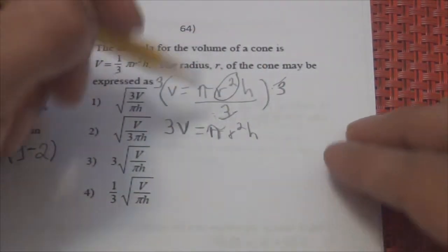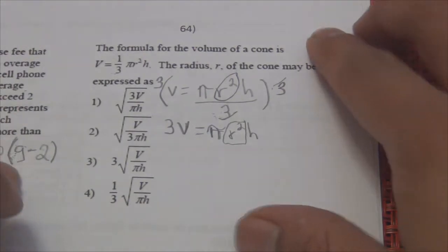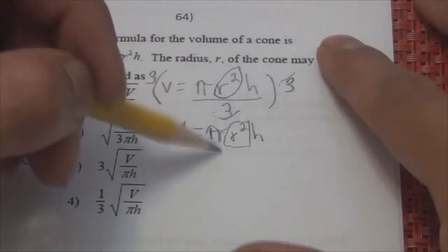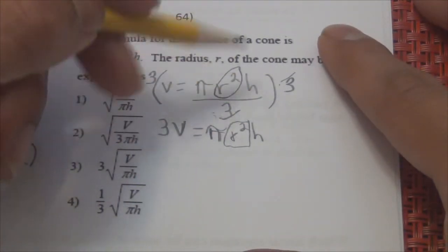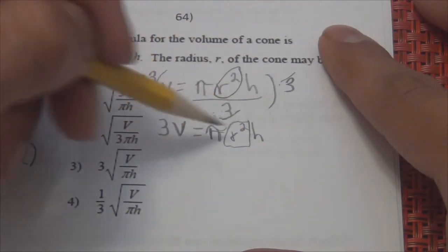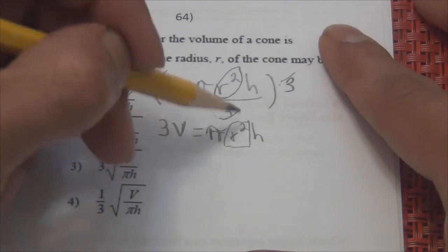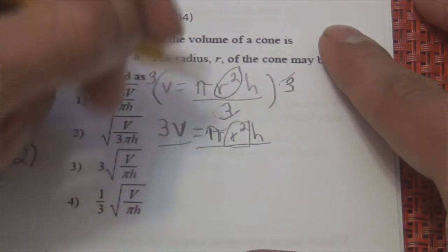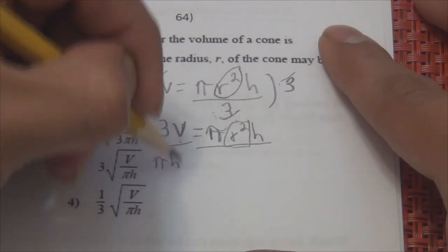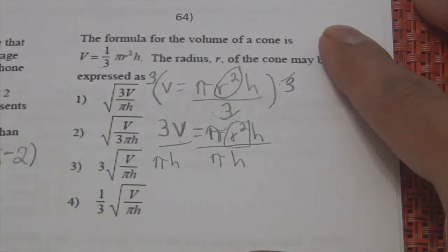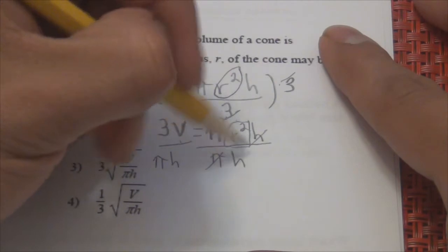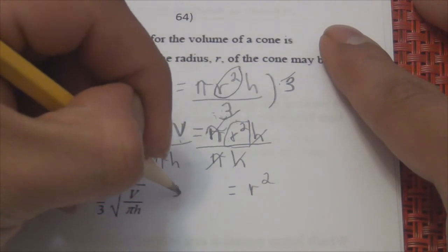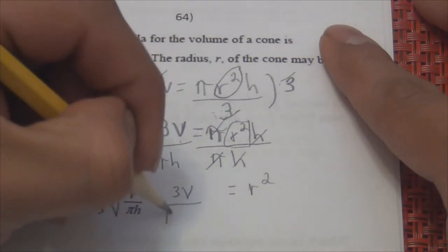Pi cancels with pi, H cancels with H, and I'm left with R squared equaling 3V over pi H. I'm not done yet — I still have to solve for R squared. How do I undo something that is squared? I have to take the square root of it. If this was a cube, I'd take the cubic root. So the square root of R squared is R.